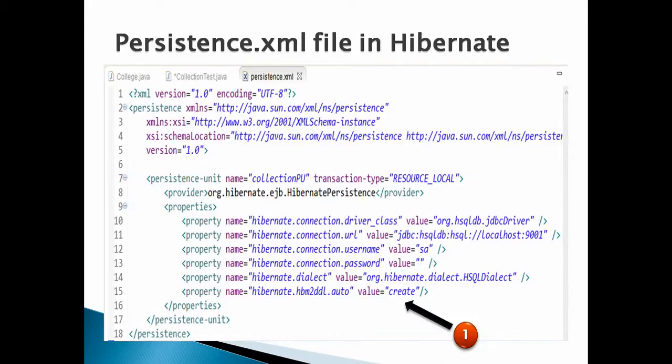The persistence.xml file used in this example must have the following properties as mentioned in the slide. You can watch my complete video on persistence.xml; in this tutorial we can skip explaining it. The only property to mention is Hibernate.hbm2ddl.auto having value as 'create'. This property signifies that whenever we run the application, it should delete the previous schema and table and create a new table based on the persist method call.